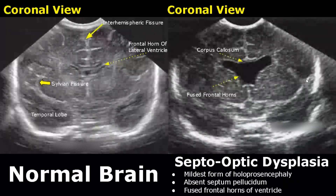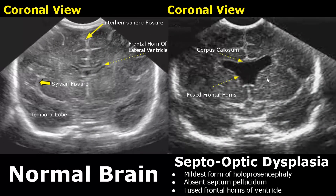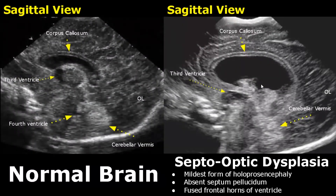Septo-optic dysplasia is the mildest form of holoprosencephaly, which has a series of brain abnormalities. In this form, the septum pellucidum is absent and we see fused frontal horns of the lateral ventricle — instead of two separate horns we see a large fused ventricle. In the sagittal view we only see a large ventricle; other structures seem normal.